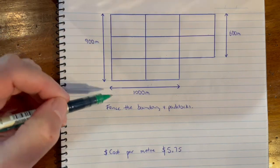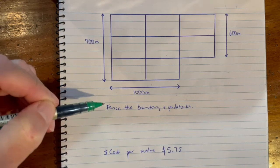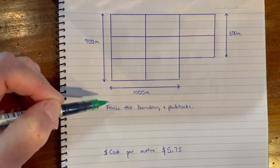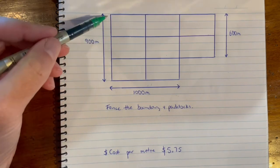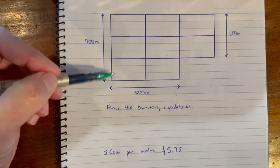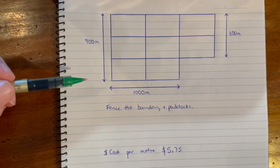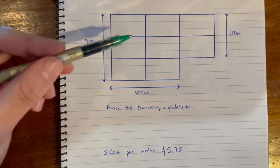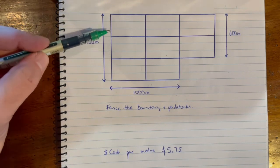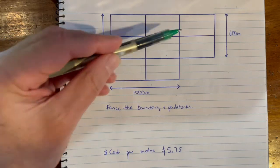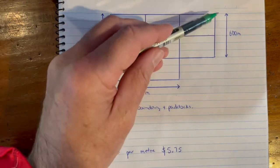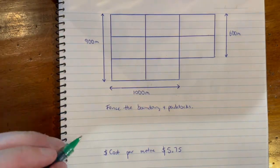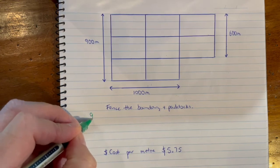So if we want to fence all of the boundaries, there's a couple of ways we can do this. You can look at this as a series of vertical lines that you would need to work out how many there are and calculate those. So there's one, two, three that are 900 meters and one that's 600 meters. You could list those like that.